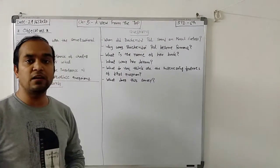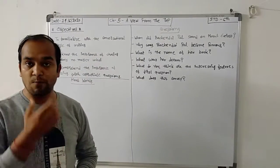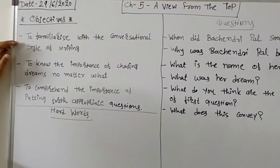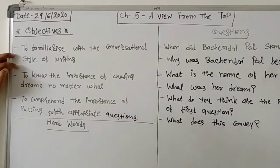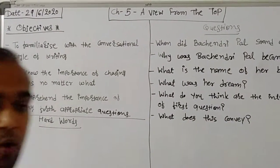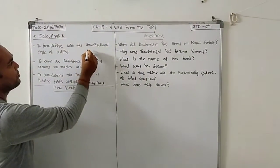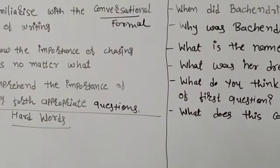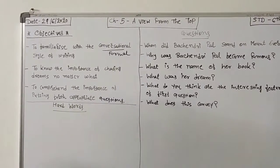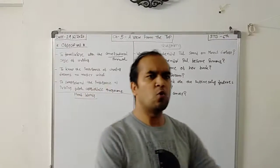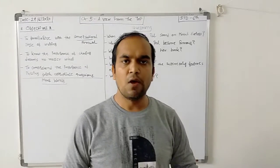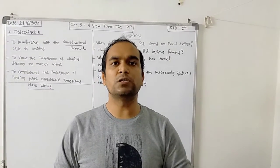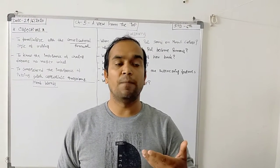Now before I start the chapter, first of all I will give you objectives of the chapter. First objective is to familiarize with the conversational style of writing. It means formal style of writing. In this chapter you will learn there is formal writing. There is no using of bombastic words. Very formal, so you can easily understand the words. In a formal way she introduced her experience and her achievement.